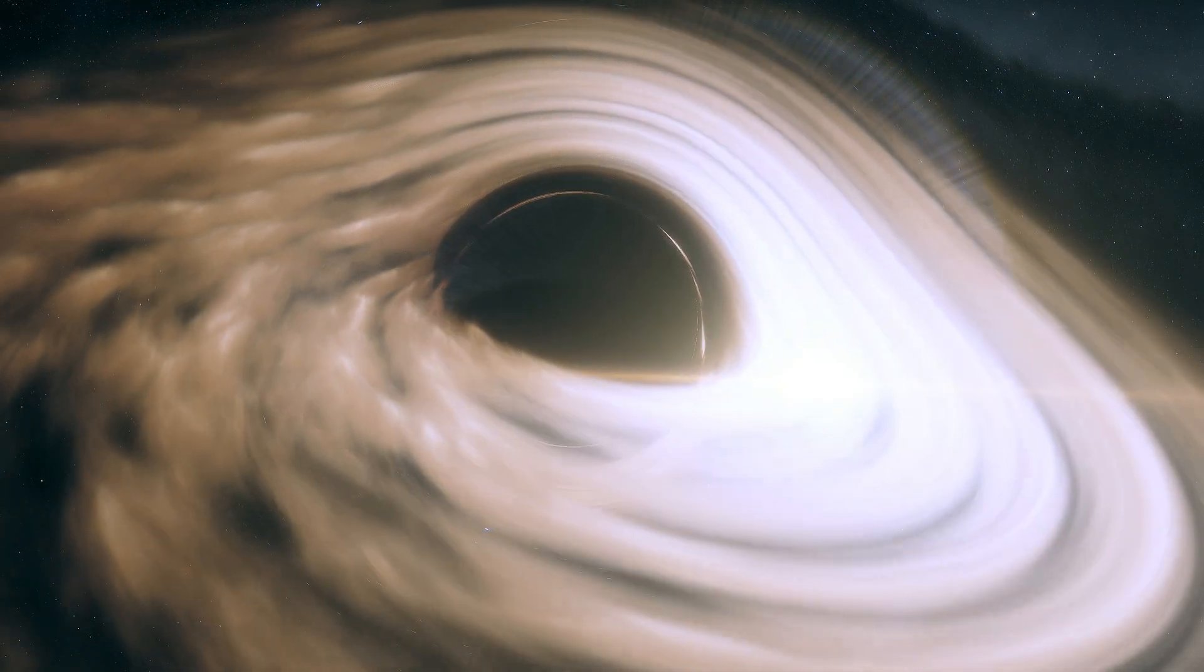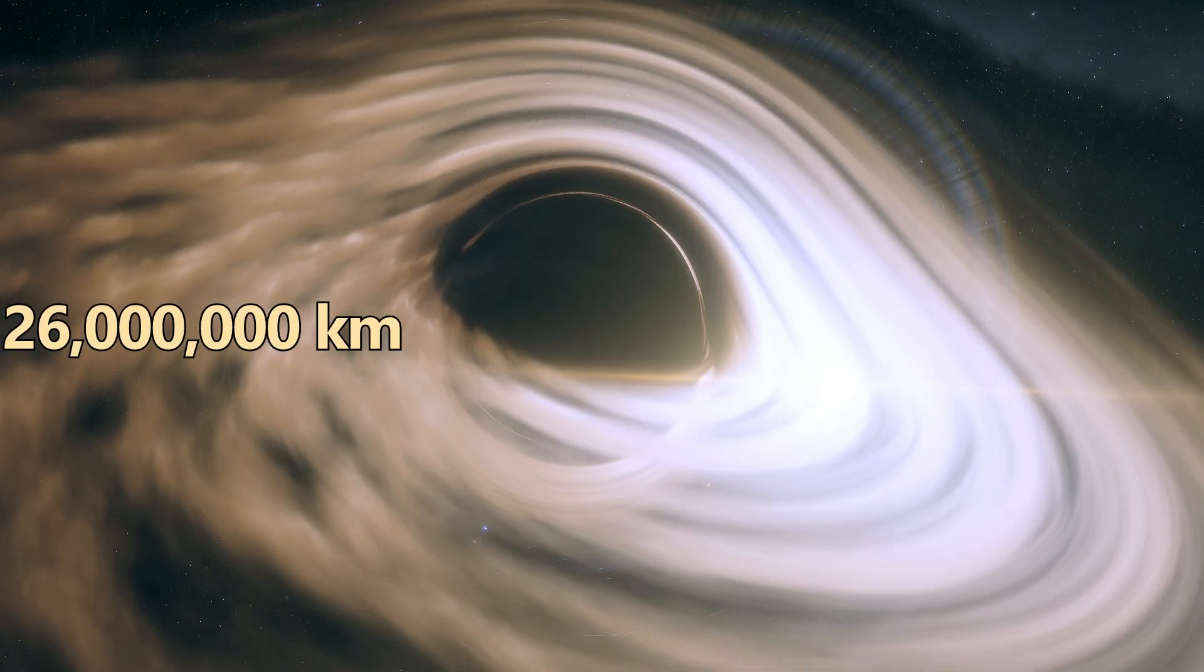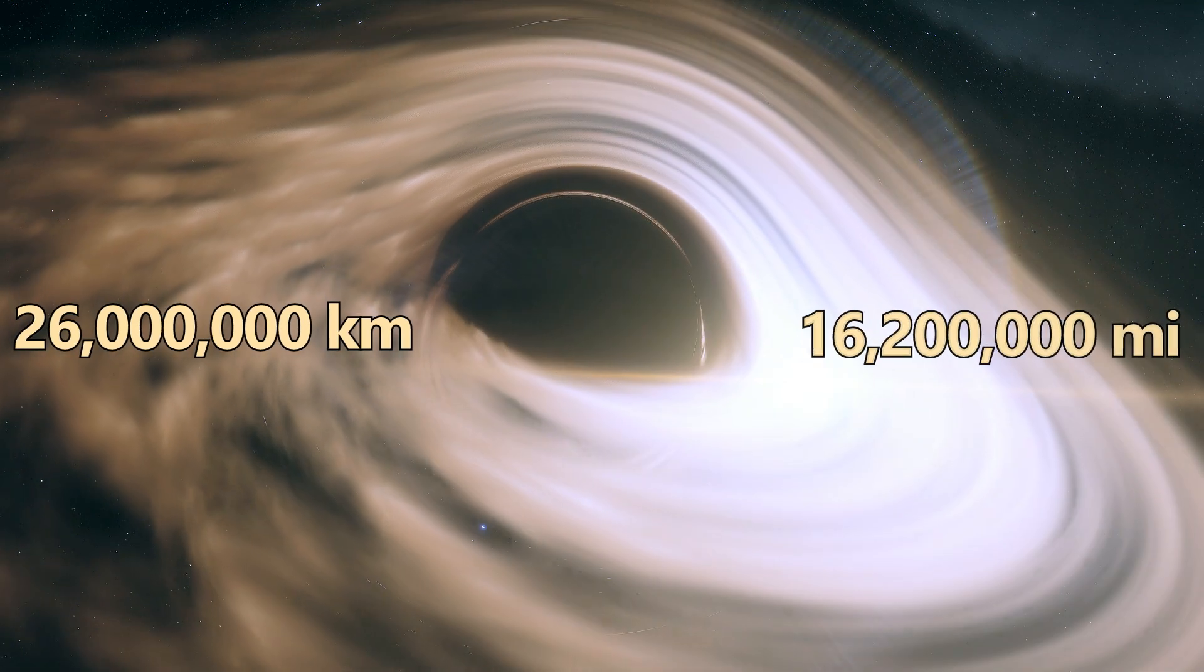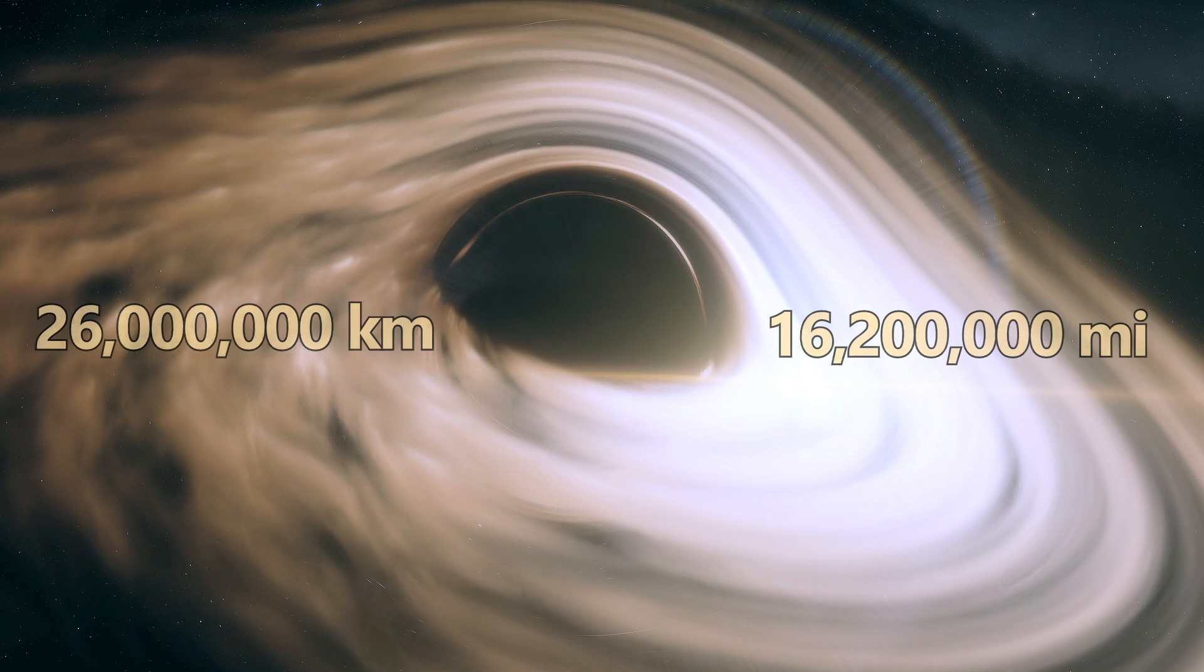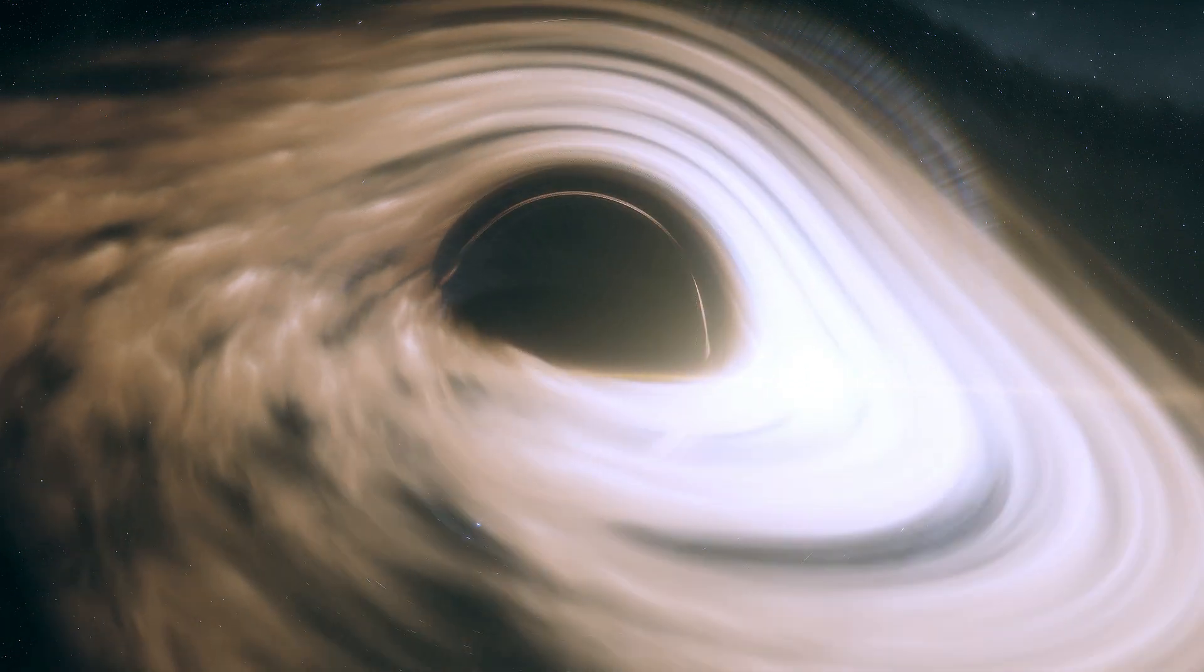Sagittarius A-star has a diameter of about 26 million kilometers, or 16.2 million miles, nearly 20 times wider than our sun, with a mass of about 4.3 million suns.